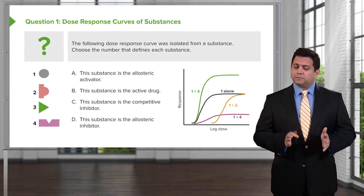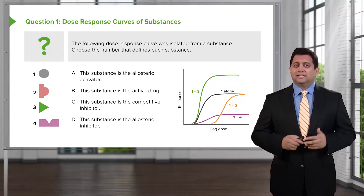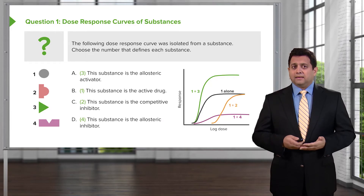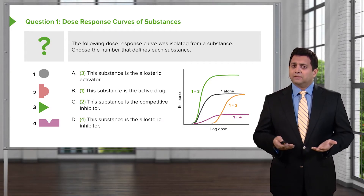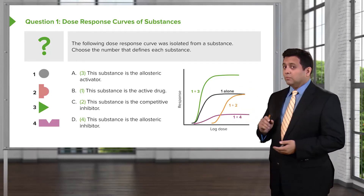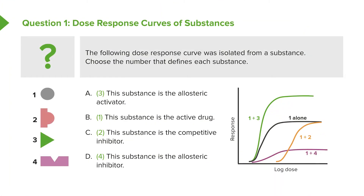Now that we understand how each molecule interacts with receptors, let's answer the question. Number 3 is the allosteric activator. The green curve — which is 1 and 3 — is much higher, showing a greater response when an allosteric activator is present. Substance C is the competitive inhibitor; notice how the yellow curve is shifted over, meaning you need a higher dose to overcome it. Substance D is the allosteric inhibitor — the plum curve starts at the same point but the total response is much lower and never exceeds a certain level, always less than drug 1 alone.